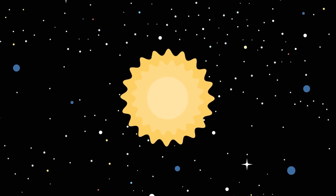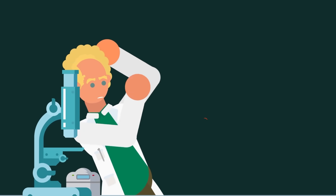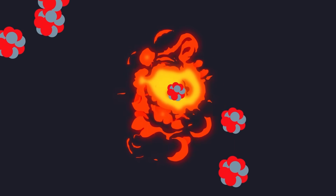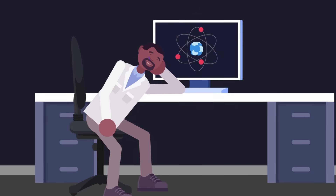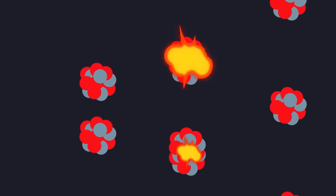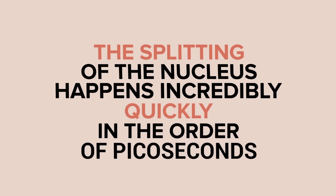Through endless experimentation and a process of trial and error, scientists eventually discovered that uranium was the element most cooperative in inducing a fission reaction. The isotope uranium-235 is one of the few materials that can be forced to undergo fission by bombarding its nucleus with neutrons, rather than waiting 700 million years for it to decay naturally. U-235's nucleus will readily absorb the neutrons, become unstable, and split, throwing off two or three new neutrons in the process. Those new neutrons can then collide with the nucleus of other U-235 atoms, starting a fission chain reaction. The splitting of the nucleus happens incredibly quickly — in the order of picoseconds, or 0.000000000001 seconds. That's 11 zeros.